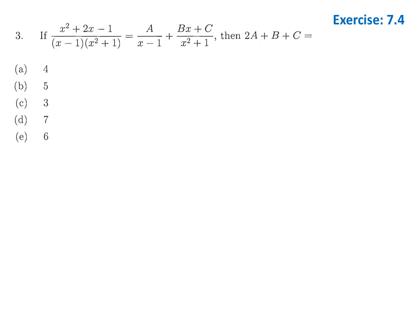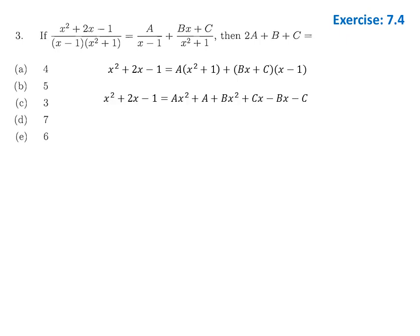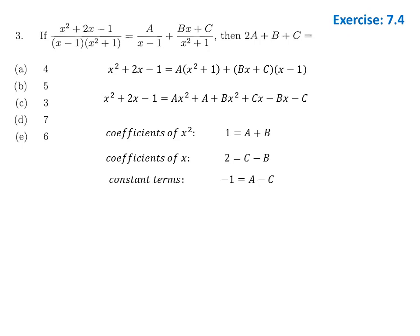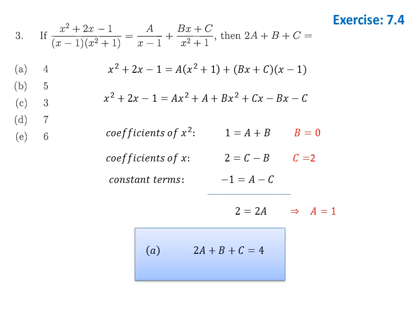The third question is a partial fraction problem from exercise 7.4. Cross-multiplying gives a polynomial expression. Comparing coefficients of x², x, and the constant term yields three equations for A, B, and C. Adding the equations gives A = 1, then B = 0 and C = 2. Our target 2A + B + C equals 4, so the first option is the answer.